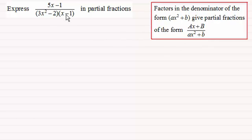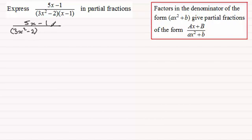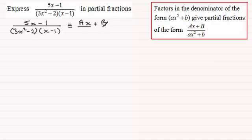So if I take this example here where we've got 5x minus 1 divided by the quadratic factor 3x squared minus 2, multiplied with a linear factor x minus 1, then this is going to be identical to: for the quadratic factor we write Ax plus B — where A and B are constants — divided by 3x squared minus 2, and then plus a constant C divided by the linear factor x minus 1.